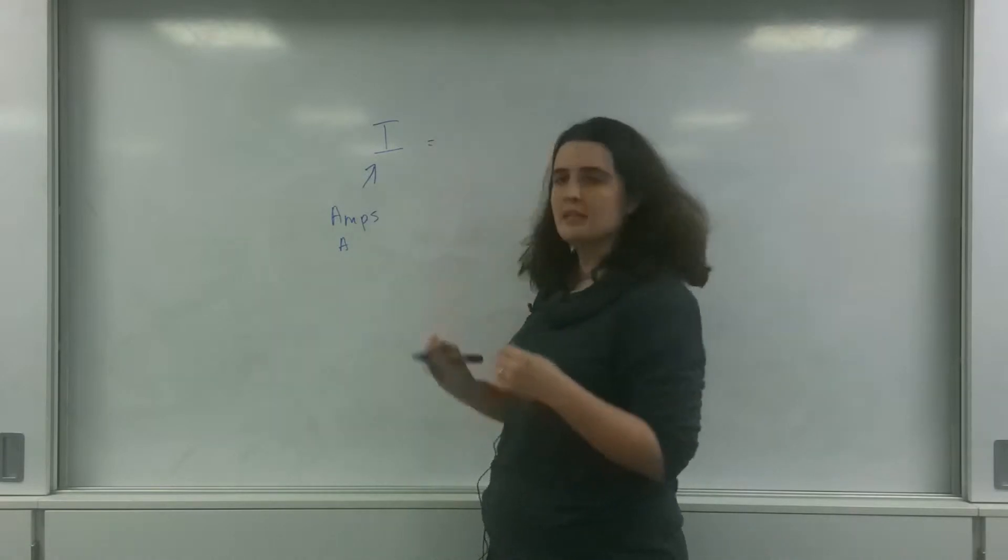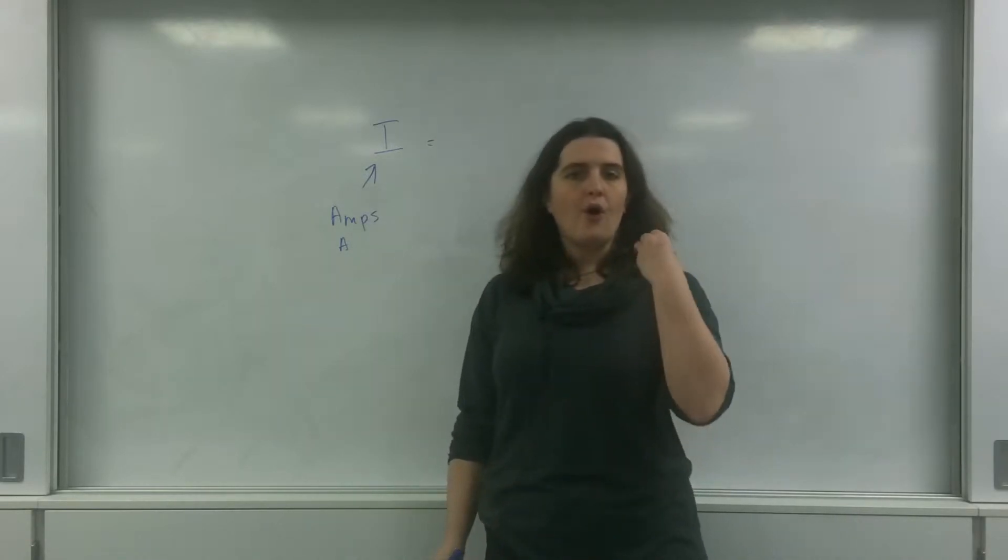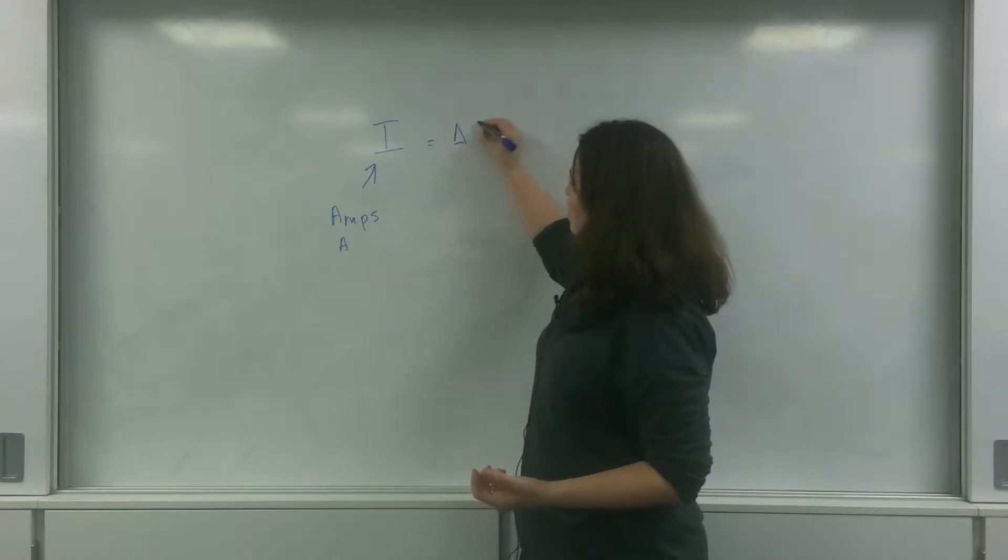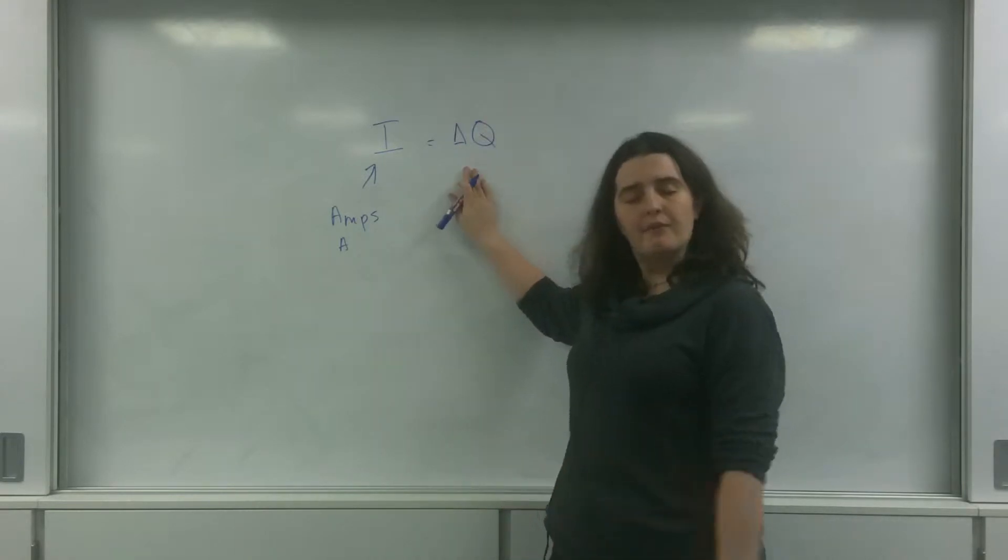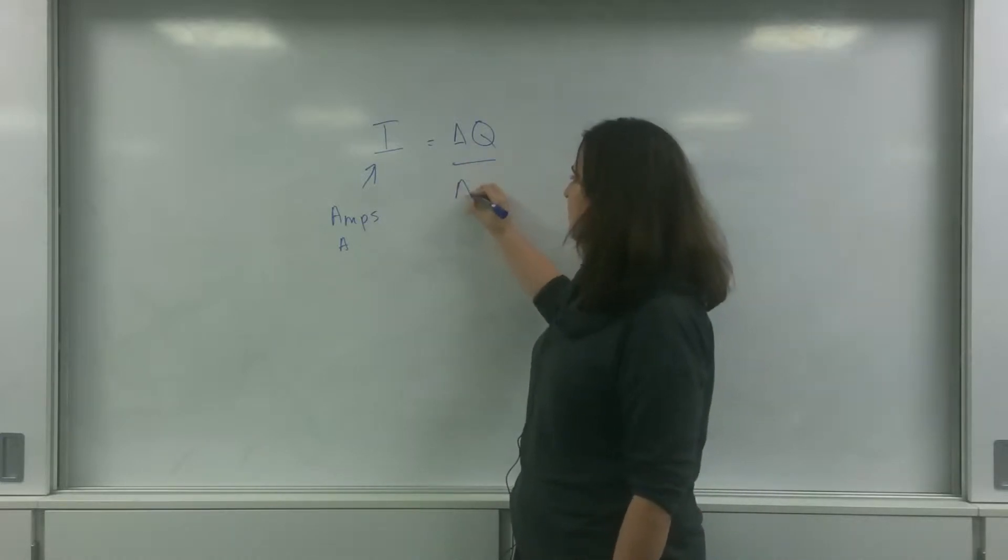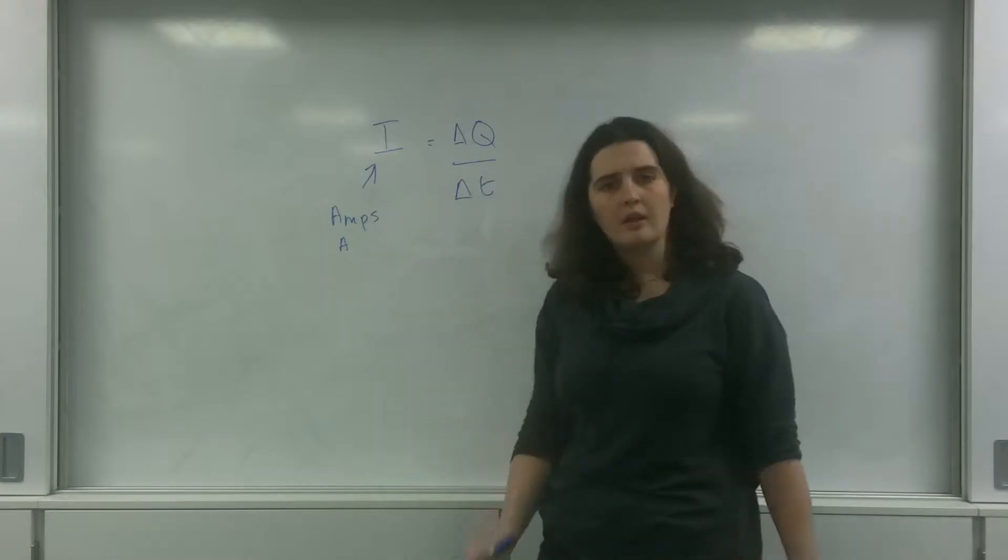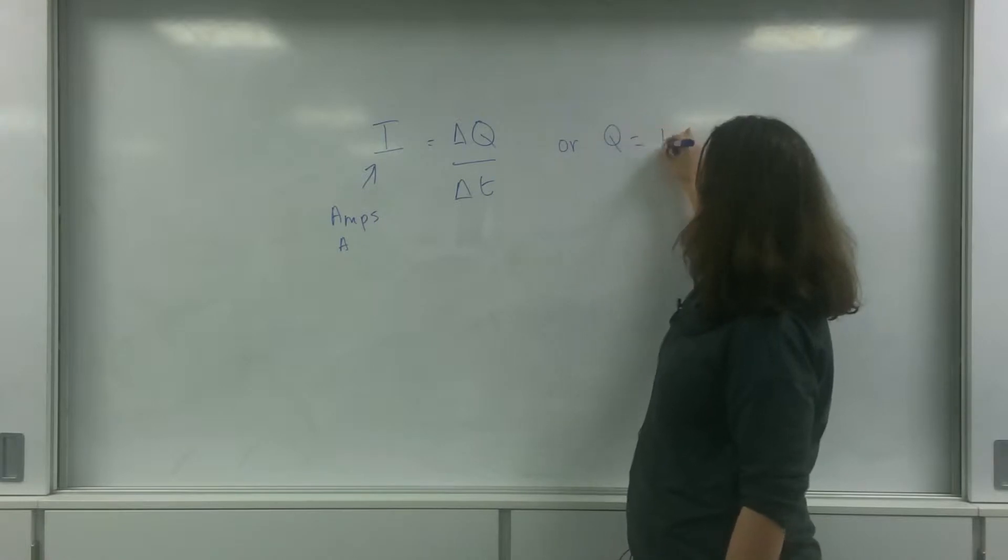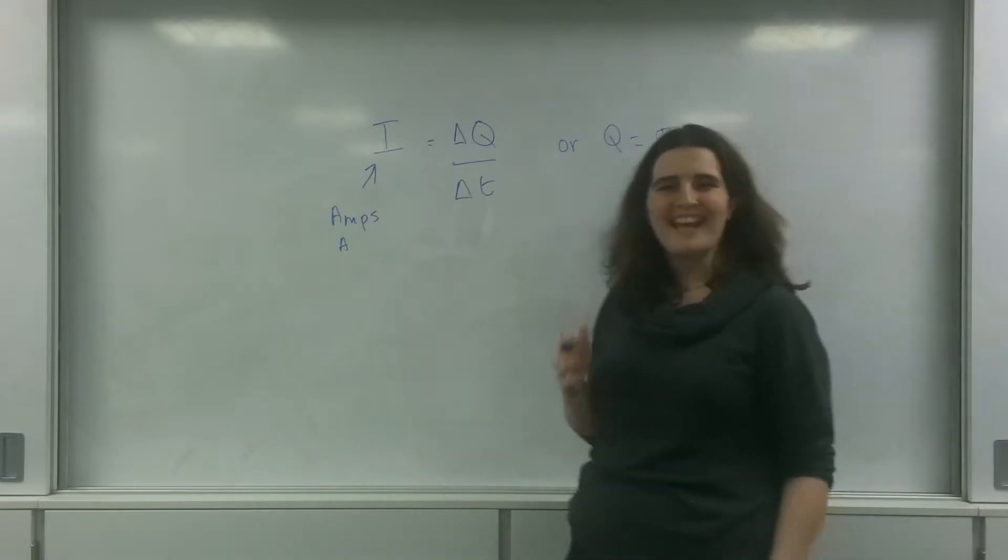Current is the rate of change of charge, and we represent charge by this letter Q here. When I say rate of change, it means it's divided by the change in time. Another way you may have seen this formula is that the charge is I times T.